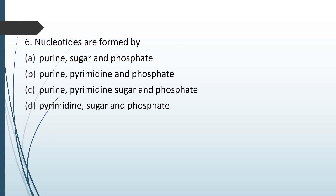Nucleotides are formed by: A — purine, sugar and phosphate; B — purine, pyrimidine and phosphate; C — purine, pyrimidine, sugar and phosphate; D — pyrimidine, sugar and phosphate.